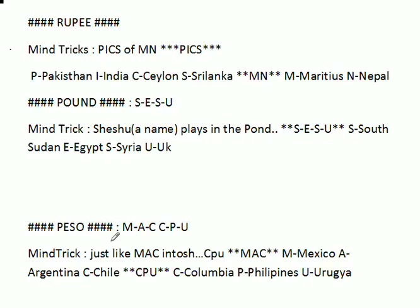Next one is peso. Remember 'MAX CPU': M for Mexico, A for Argentina, C for Chile, C for Colombia, P for Philippines, U for Uruguay. That's how you remember the peso countries using MAX CPU.